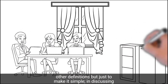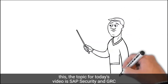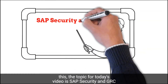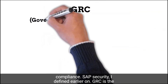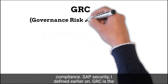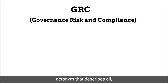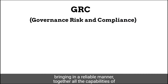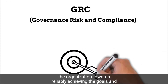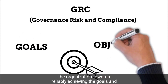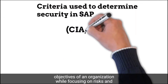There are various other definitions, but just to make it simple. The topic for today's video is SAP Security and GRC — Back to Basics. GRC is an acronym for Governance, Risk, and Compliance. GRC describes bringing together in a reliable manner all the capabilities of the organization towards reliably achieving the goals and objectives of an organization while focusing on risks and acting with integrity.